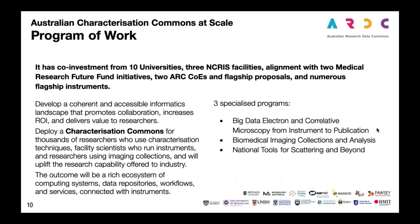The program itself is broad, across many locations across Australia including three NCRIS facilities. Characterization instruments are very distributed across Australia, typically in laboratories. What we're doing is deploying what we call the Characterisation Commons — a suite or ecosystem of computing systems, data repositories, workflows, services, and instruments. It is not one thing; it is a wide range of capabilities deployed across four locations in Australia, alongside three specialized programs in big data electron microscopy, correlative microscopy in biomedical imaging collections, and national tools for scattering.